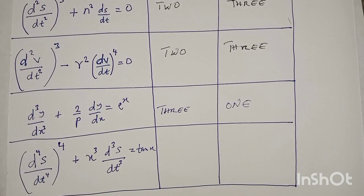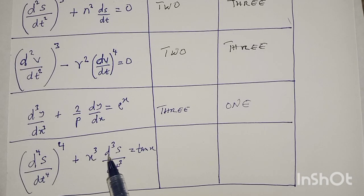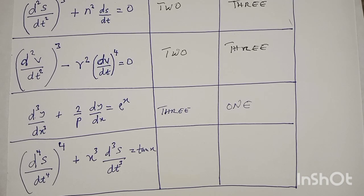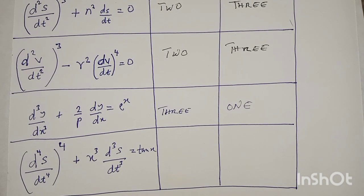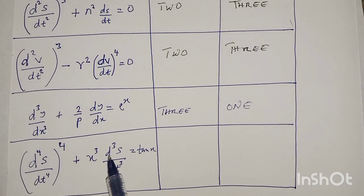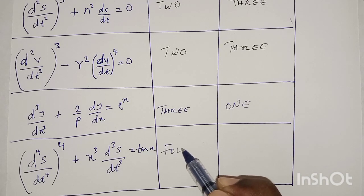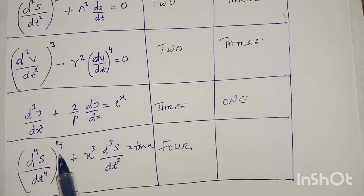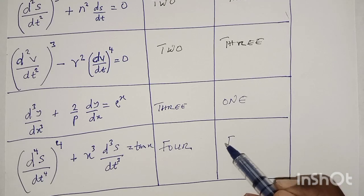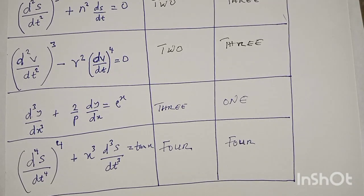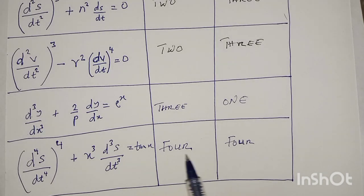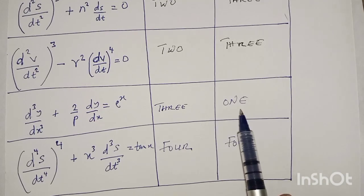Lastly, we have (d⁴s/dt⁴)⁴ + x³(d³s/dt³) = tan(x). The highest derivative is d⁴s/dt⁴, which is a fourth derivative, while d³s/dt³ is a third derivative. So the order is 4. The degree is also 4 because the degree is the power of the highest derivative, and this highest derivative has power 4. So this differential equation is of order 4 with degree 4.